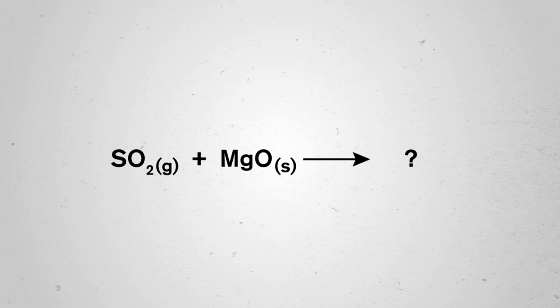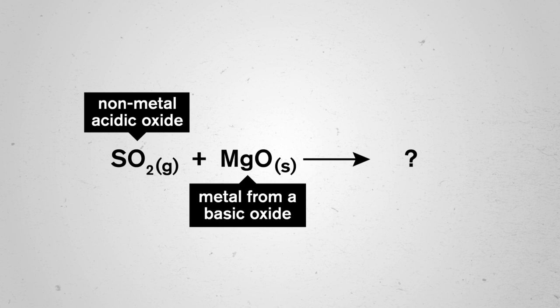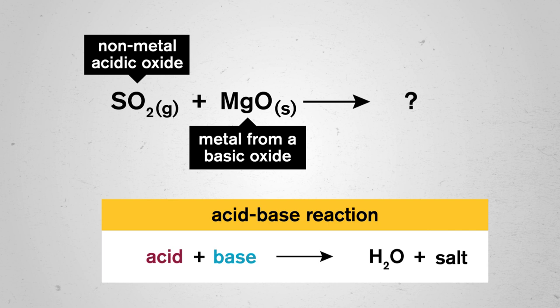We could also put our knowledge of acids and bases together and figure out what happens if we combine a basic oxide with an acidic oxide. We only need steps one and two to predict the product here. We write out our anhydrous reactants and identify this as an acid-base reaction, just minus the water. So, we already know what the expected product is… a salt!